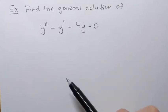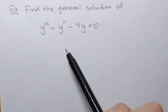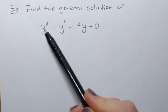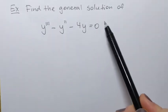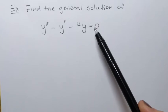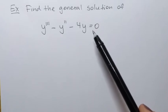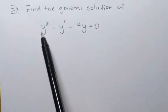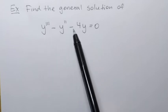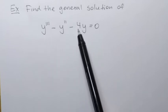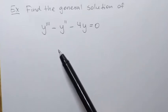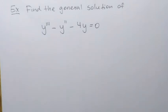Let's try to solve the following differential equation. This is third order, homogeneous — that zero on the right-hand side means it's homogeneous — a linear equation with constant coefficients. See how the coefficients are all constants: 1, negative 1, negative 4. To solve this equation, first we're going to obtain the corresponding characteristic equation.